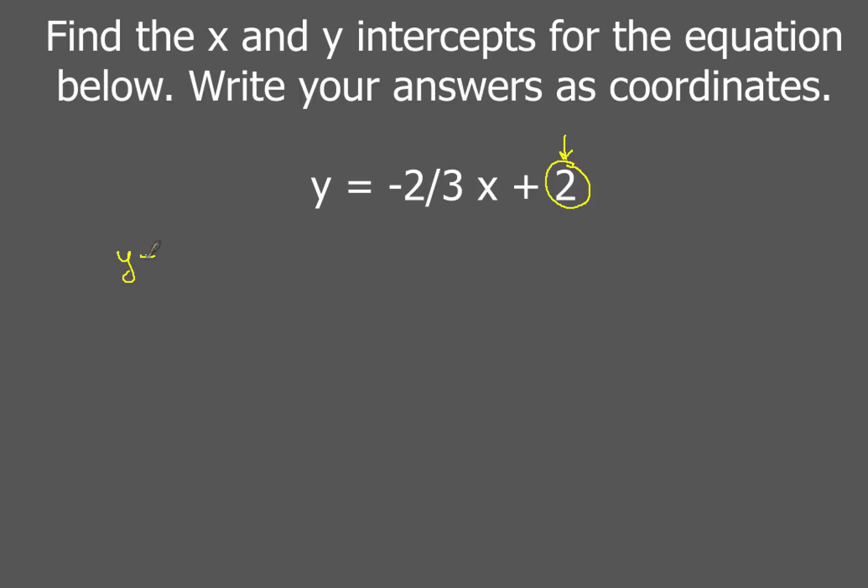So you're going to have y equals two is going to be your y intercept. So the coordinates there of course are going to be zero comma two. That's going to be your y intercept. So that's really really easy.